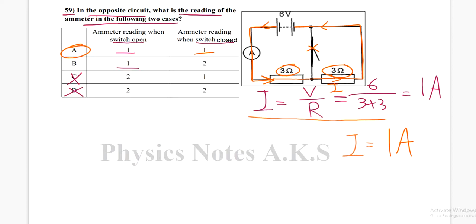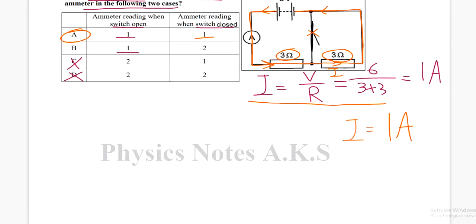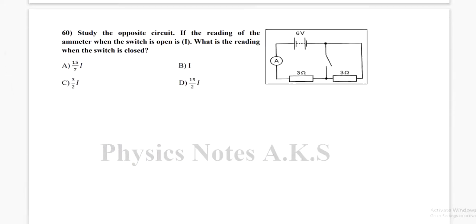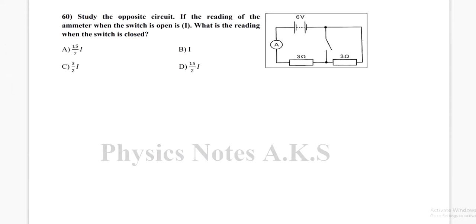This question is repeated in number 60. You see the same drawing. They say: study the opposite circuit. If the reading of the ammeter when the switch is open was I, what is the reading when the switch is closed? What difference does it make when we close the switch?